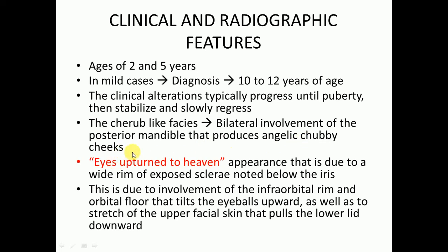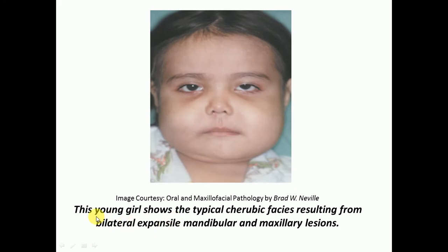Another characteristic feature in cherubism patients is eyes upturned to heaven. This is due to a wide rim of exposed sclera noted below the iris. It is caused by involvement of the infraorbital rim and orbital floor, which tilts the eyeballs upward and stretches the upper facial skin, pulling the lower lid downward.